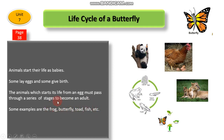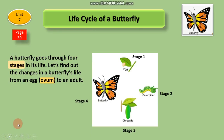A butterfly goes through four stages in its life. Let's find out the changes in a butterfly's life from an egg to an adult butterfly.